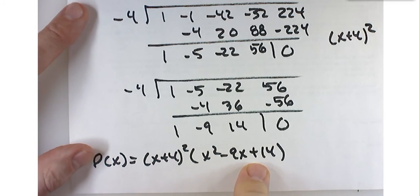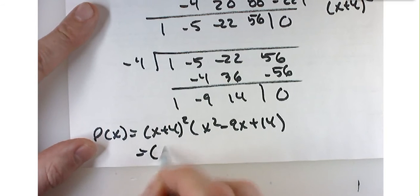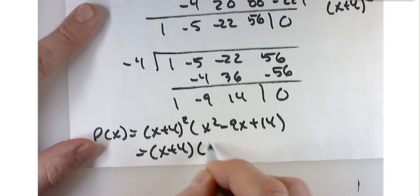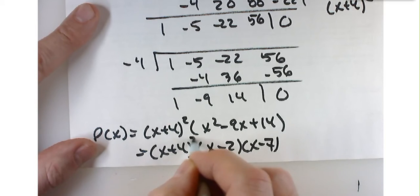Or hopefully, better yet, just factor it. So x plus 4 times x plus 4 times x minus 2 times x minus 7, and that'll still be squared.